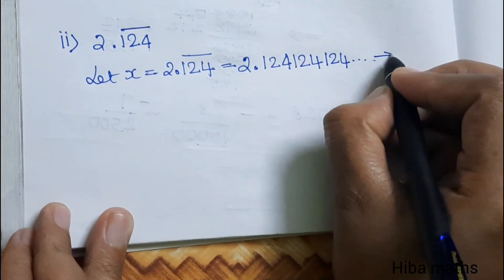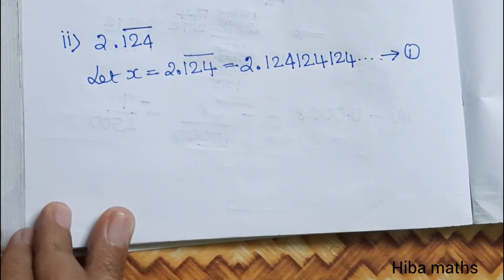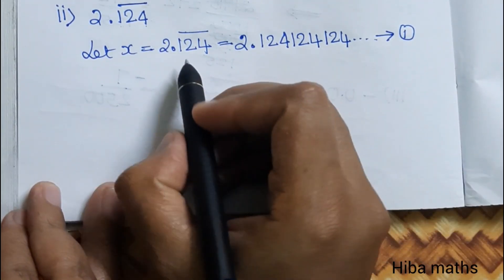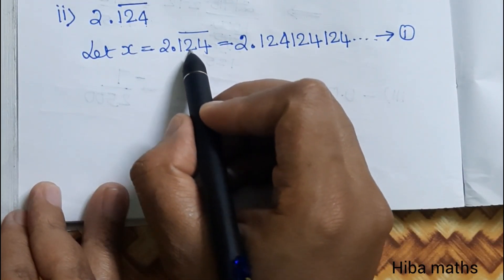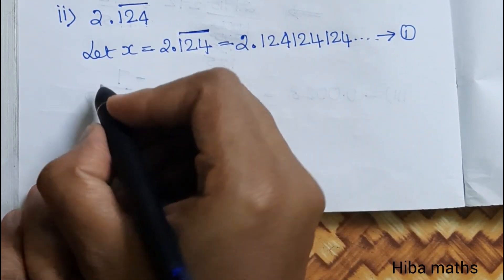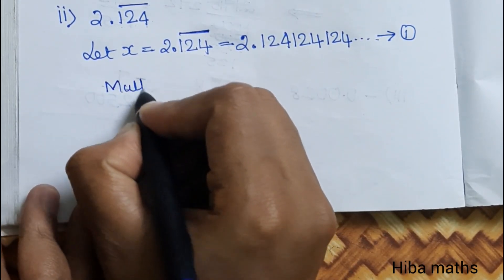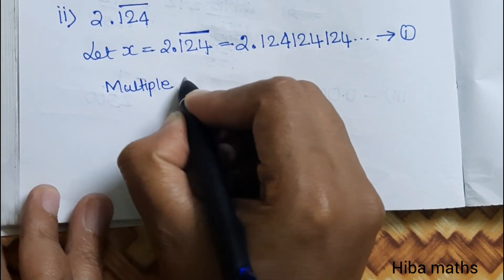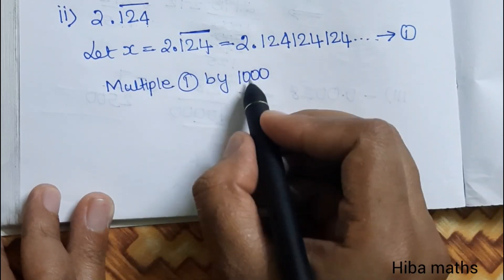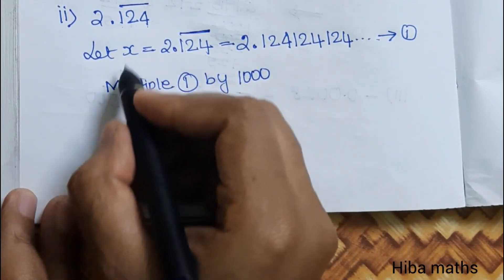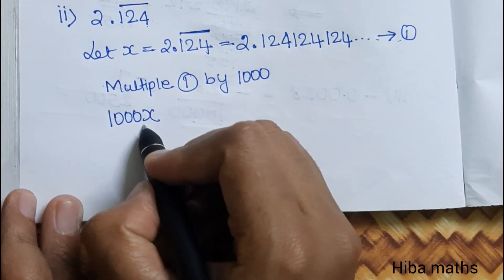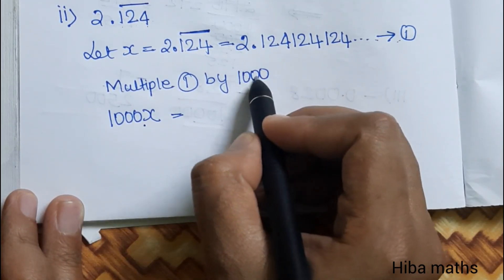We go to the first equation. The period of the decimal is 3 digits. Since 3 numbers are repeating, we multiply equation 1 by 1000. So 1000 into x equals 1000x.